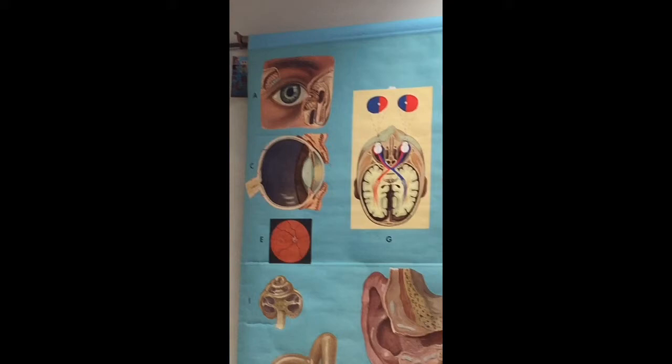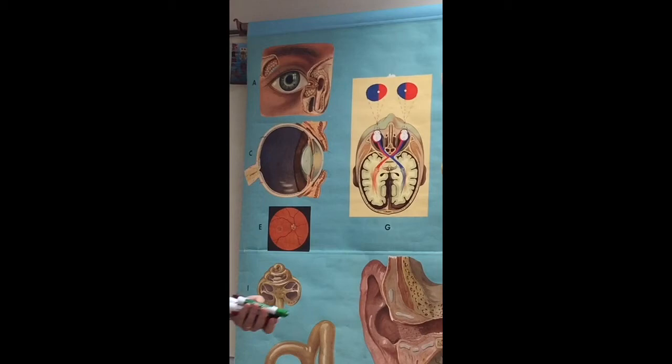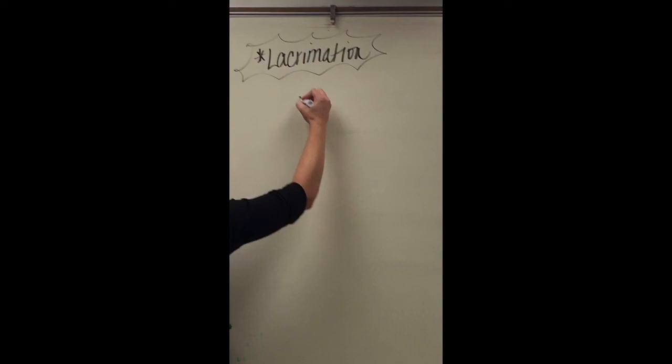This concept of tears keeps coming up, so let's talk about lacrimation for this last part. If we were just to fill out a flow chart so that we know how lacrimation occurs, we know cranial nerve seven is associated with lacrimation. That's going to stimulate production of tears from our lacrimal gland.